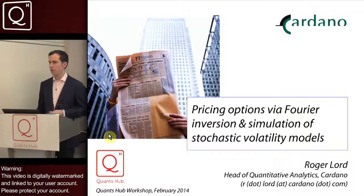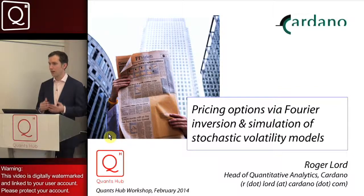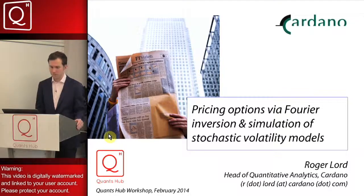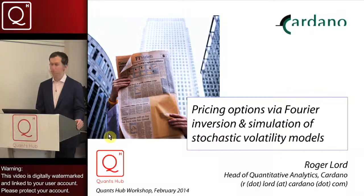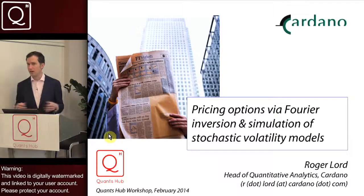Within this part of the workshop we'll look at three models: the Heston model, the Schobel-Zhu model, and the SABR model, which many of you use in practice via asymptotic expansion. We'll look at how to simulate SABR as efficiently and robustly as possible in a Monte Carlo setting. Monte Carlo is still the method of choice for pricing exotic derivatives — it handles path-dependent options, early exercise features via Longstaff-Schwartz, and is easily parallelizable on GPU or grid environments.